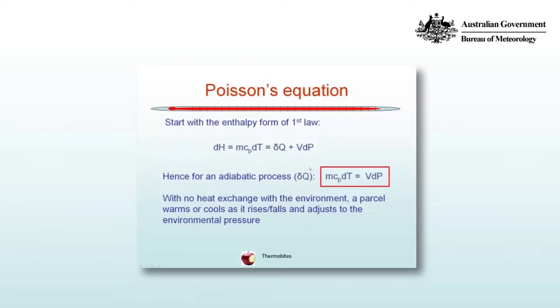Poisson's equation describes the motion of a parcel of air moving through the atmosphere undergoing an adiabatic process, that is, del Q is equal to zero.